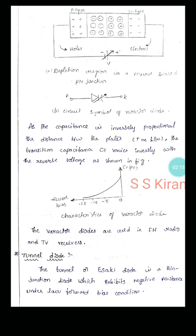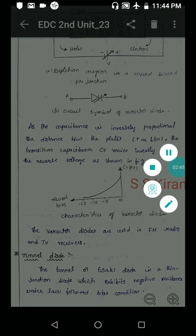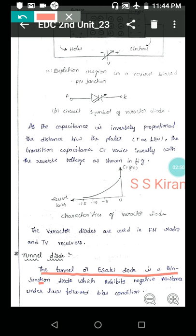Because of the thin junction, it exhibits negative resistance under low forward bias condition. Every diode, we can observe the characteristics in forward bias and reverse bias. Coming to the forward bias, it exhibits some negative resistance. That's why it is a special, powerful diode. A tunnel diode or Esaki diode is a thin junction diode which exhibits a negative resistance under forward bias condition.